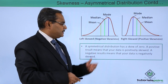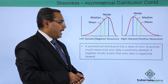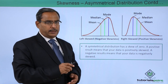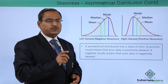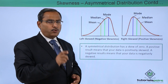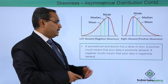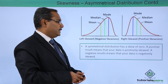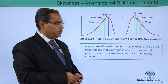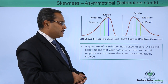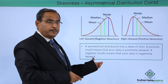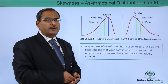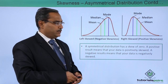A symmetrical distribution has a skewness value of 0. When the distribution is symmetric, the mean, median, and mode all fall at the same class, so the skewness will have the value 0. A positive result means that your data is positively skewed, and a negative result means that your data is negatively skewed. Here we have demonstrated the meaning of positive and negative skewness.